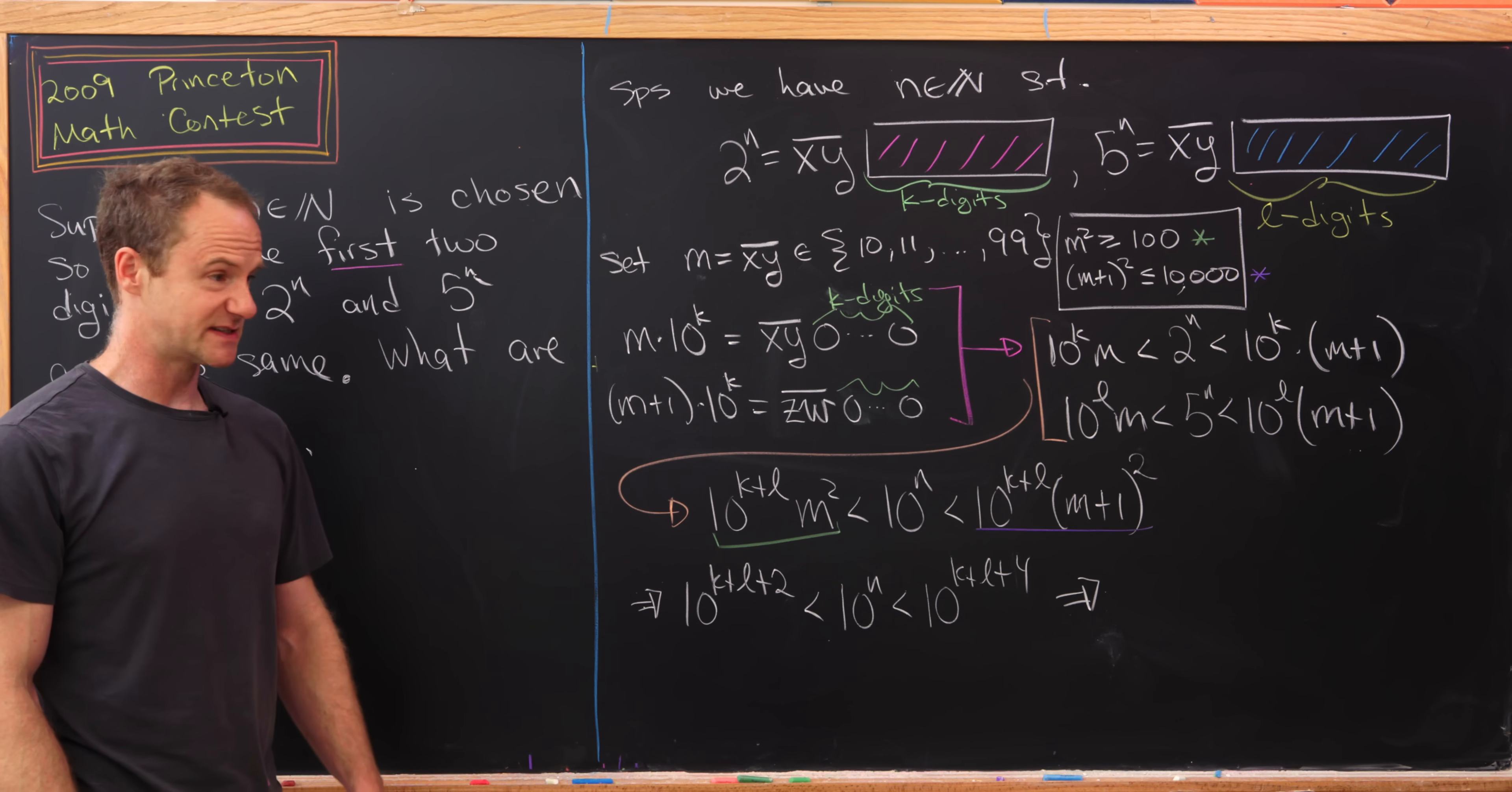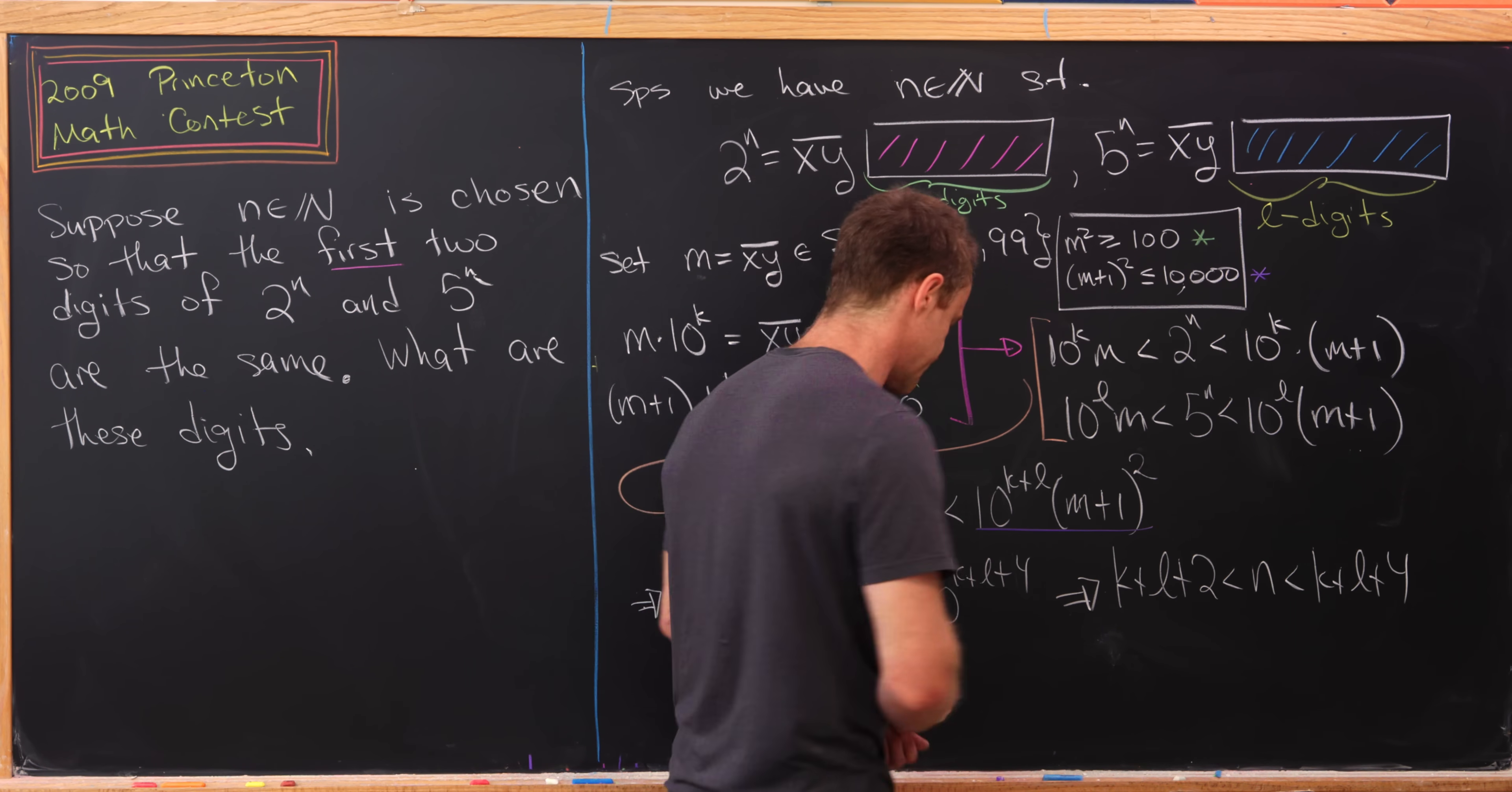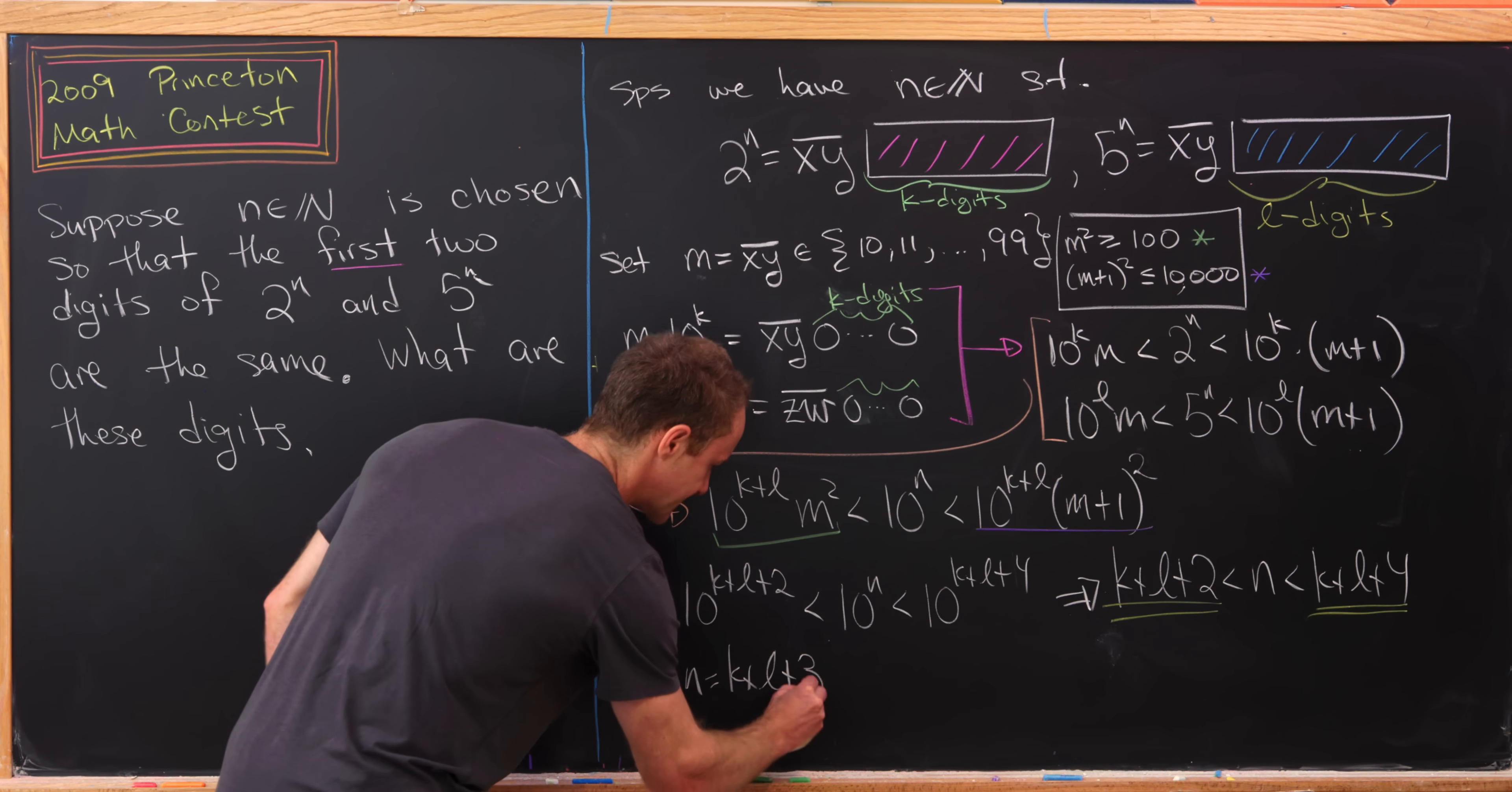Now taking the log base 10 of both sides, and using the fact that that's an increasing function, gives us this inequality: k+l+2 is strictly less than n, which in turn is strictly less than k+l+4. We've got two natural numbers that flank n that are two units apart. But then n is also a natural number, so that means n has to be the one right in between. In other words, n equals k+l+3.